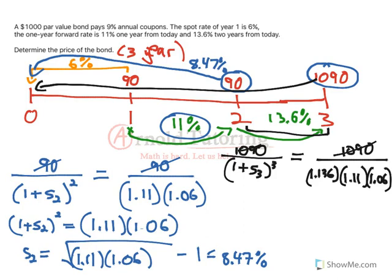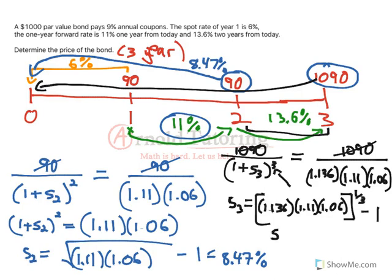So the 3 years, the 2 forward rates, and the 1 year spot rate must be equivalent to just the 3 year spot rate for 3 years. I'm going to isolate for S3. This will equal 1.136 times 1.11 times 1.06, all taken to the power of 1 over 3, and then minus 1. So we get S3 equals about 10.15%.